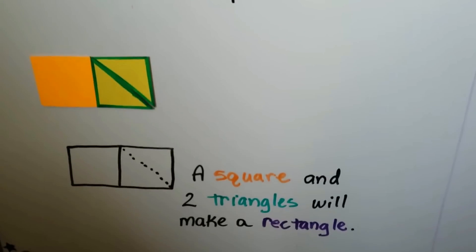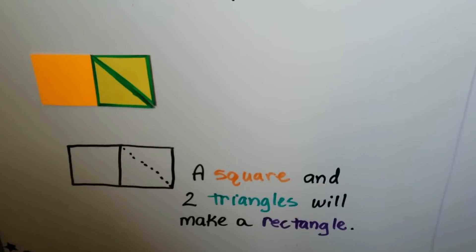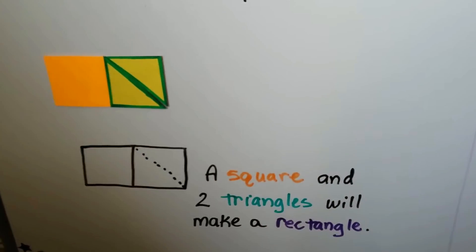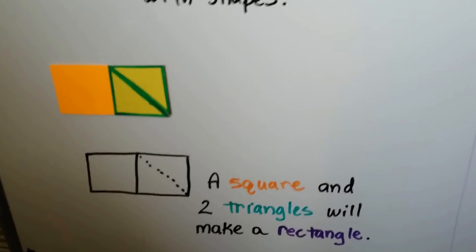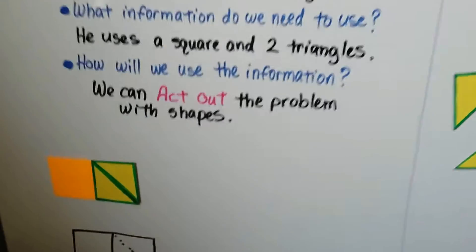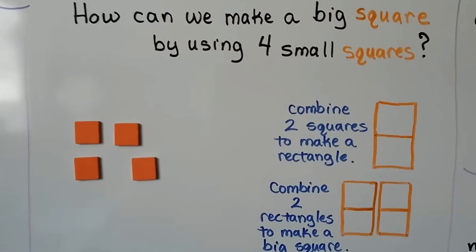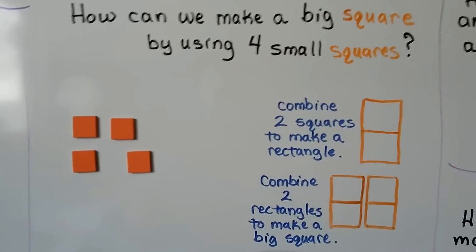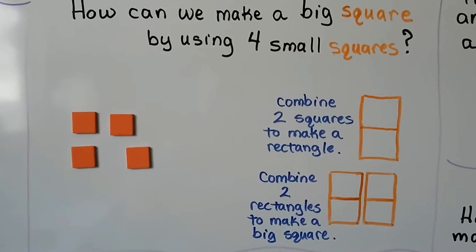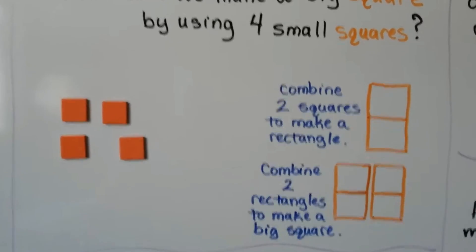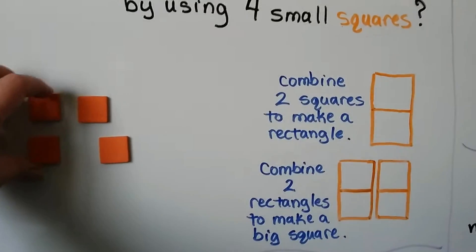A square and two triangles will make a rectangle. Two triangles make a square. How can we make a big square by using four small squares? We combine two squares to make a rectangle, just like that, and we make another rectangle and put them together.